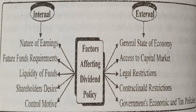Next and last point is government's economic and tax policies. The government has many policies such as fiscal policy, industrial policy, labour policy, and other governmental policies. If bank rate is increased, then automatically the rate of dividend gets reduced. Similarly, corporate taxes on dividend and capital gains also affect the rate of dividend of the company. A high rate of taxation reduces the residual profits available for distribution to shareholders and consequently the rate of dividend is lowered.